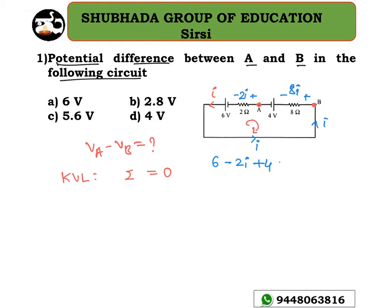Now let's find the value of the current flowing through the circuit. 6 plus 4 is 10 volts, minus 10 times I equals zero. This implies I equals 1 ampere. So 1 ampere of current is flowing through the circuit.